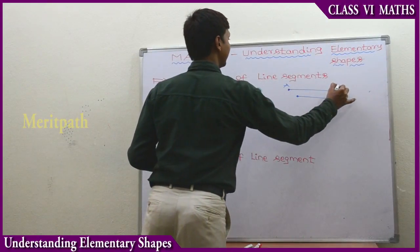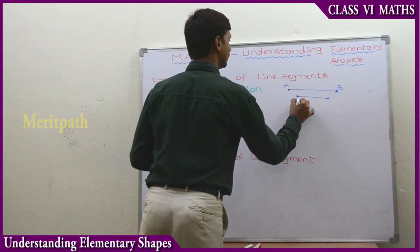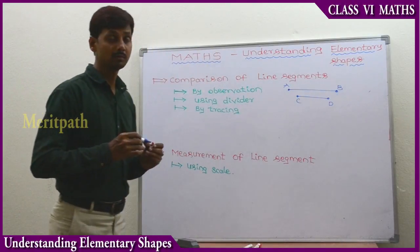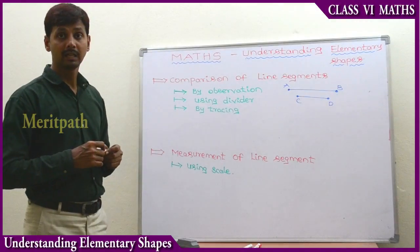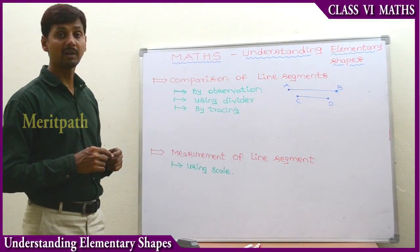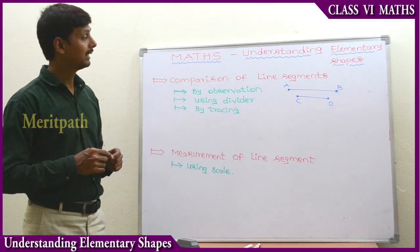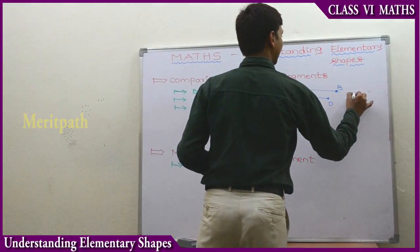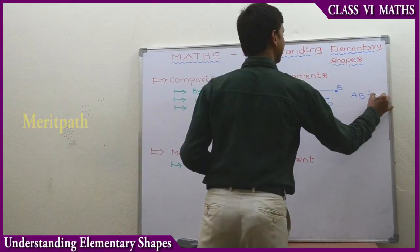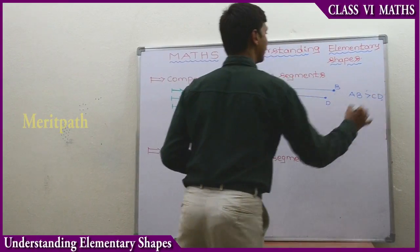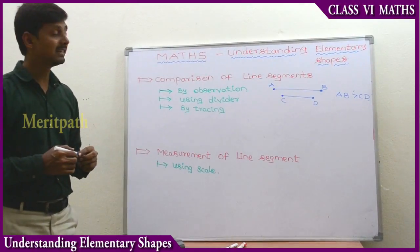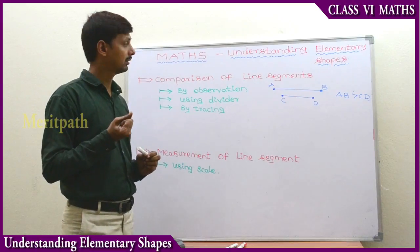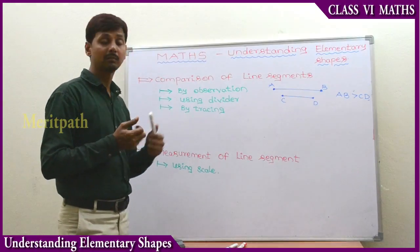Let's take two line segments AB and CD. By observation we can see these two line segments and determine that AB is greater than CD. In this way we can say which is the greater line segment and which is the smaller one just by observation.